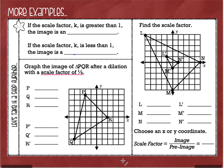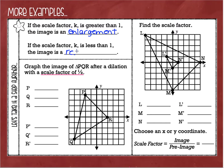Let's talk a little bit more about scale factors. If you have a scale factor that is greater than one, that's going to give you a larger figure, and we call that an enlargement. If your scale factor is a number less than one — say it's like one-fourth — that's going to be a smaller figure, which we call a reduction. Here's an example: we're going to graph the image of triangle PQR after a dilation with a scale factor of one-half. Since this is less than one, that tells me the triangle is going to get smaller.